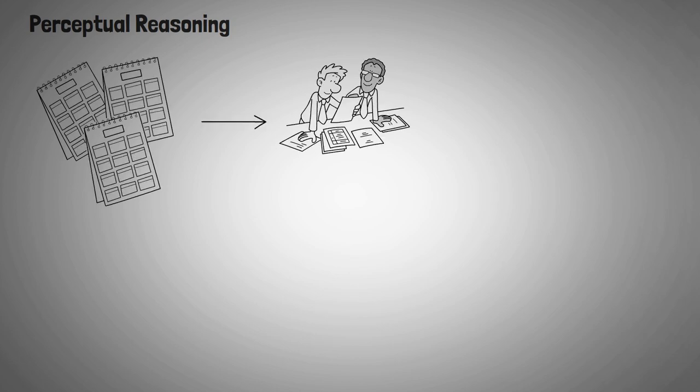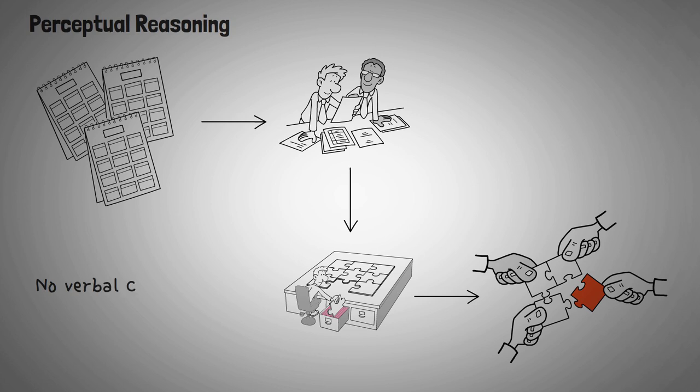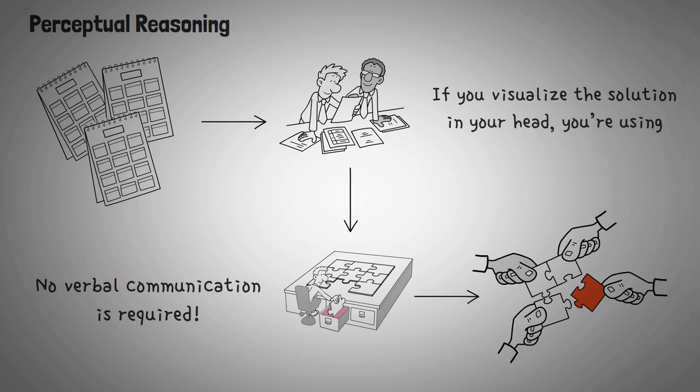Perceptual reasoning is the ability to take in visual information and organize it, interpret it, and use it to solve problems. No verbal communication is required. If you're solving a problem that requires you to visualize the solution in your head, you're using perceptual reasoning.